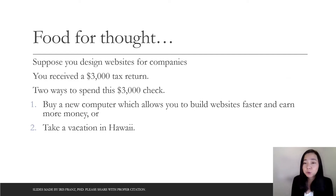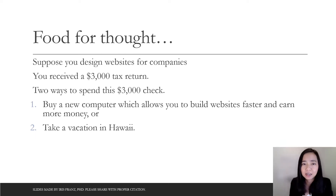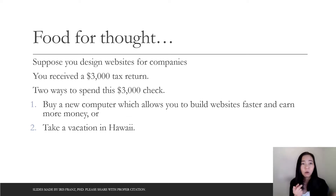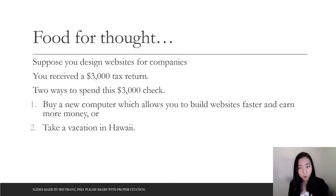To produce more capital, you will have to sacrifice some consumption goods. For example, think about yourself. Suppose you are designing websites for companies and you make money that way. You receive a $3,000 tax return. There are two ways you can spend this $3,000: you can buy a new computer, or you can use this $3,000 to have a nice vacation in Hawaii.